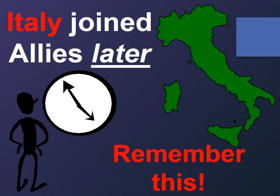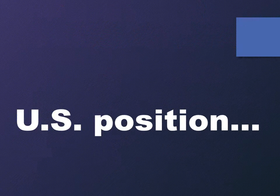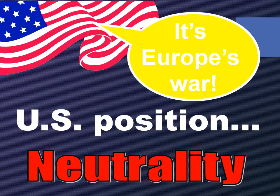Italy joined the Allies later — you're going to want to remember they joined in later. Bulgaria later joined the Central Powers. But ultimately, people thought the war would not last long. In upcoming lessons we're going to talk about the US position and its neutrality, its belief that it's Europe's war and not our problem. Ultimately we do see that the US takes a more active stance in the war, but that's for the upcoming lessons.